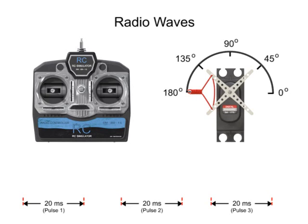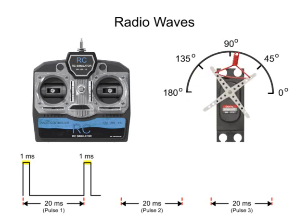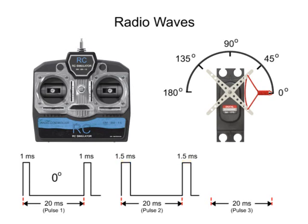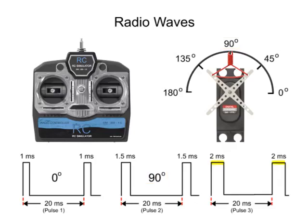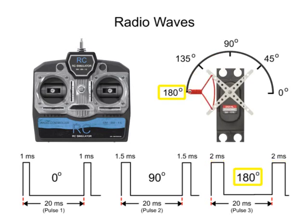For example, if the pulse is high for 1 millisecond, then the servo horn position can be programmed to be at 0 degrees. If it is 1.5 milliseconds, it is set to the center, or 90-degree position. If the pulse signal is 2 milliseconds, then it can be instructed to go to the 180-degree position.